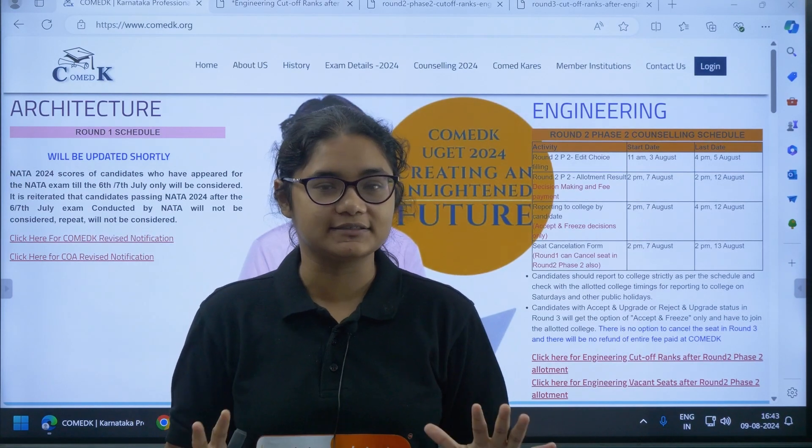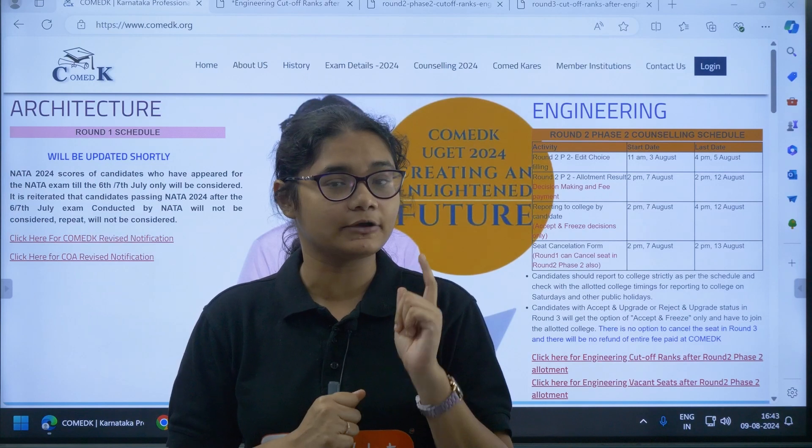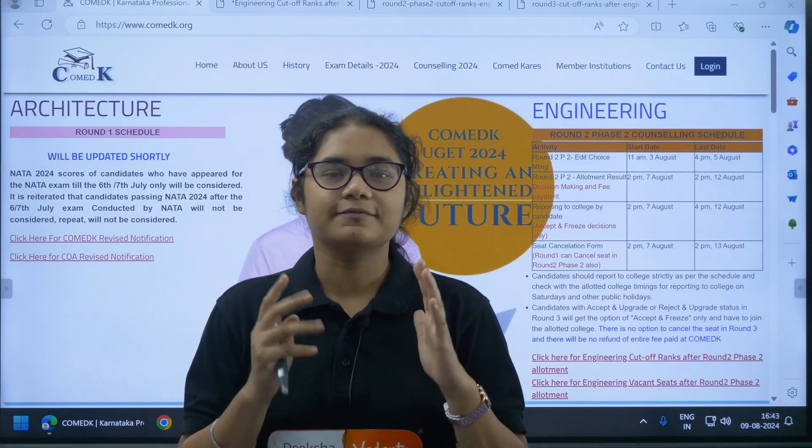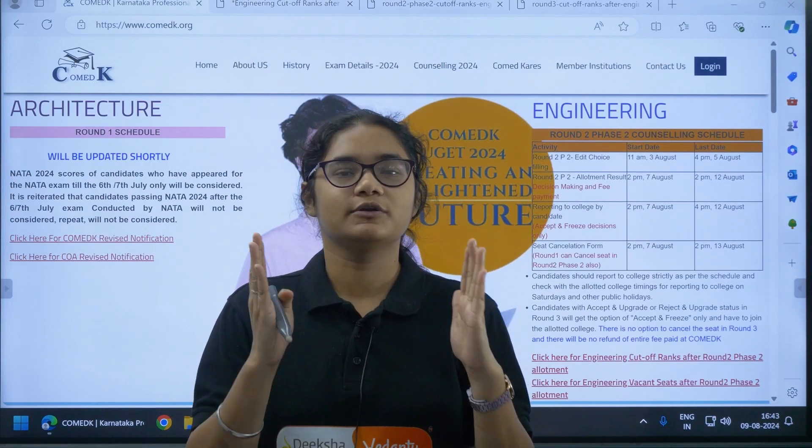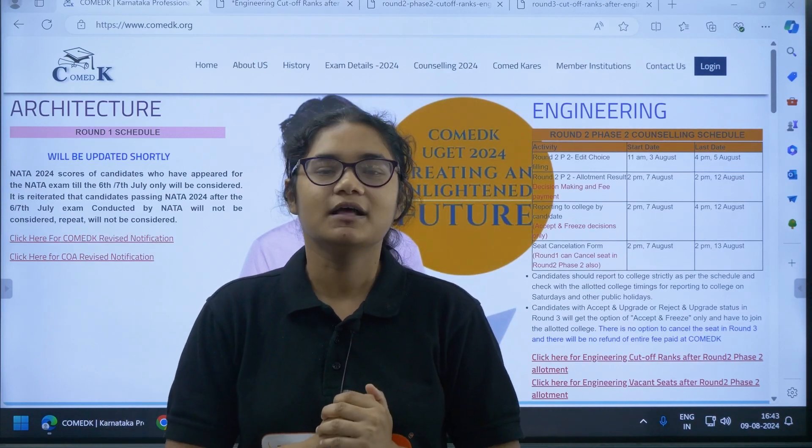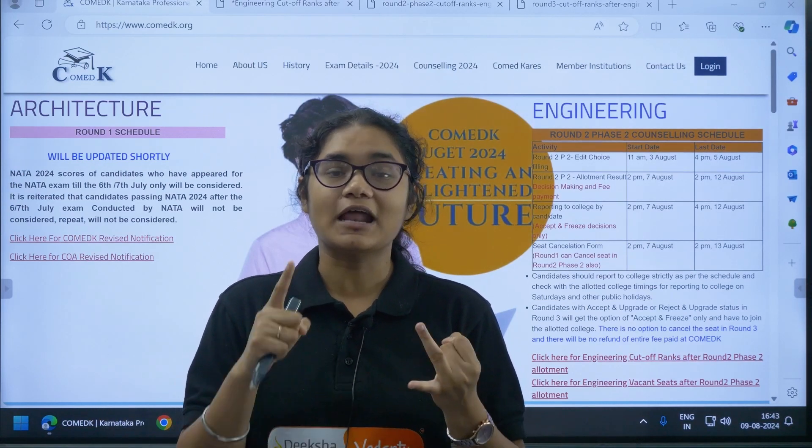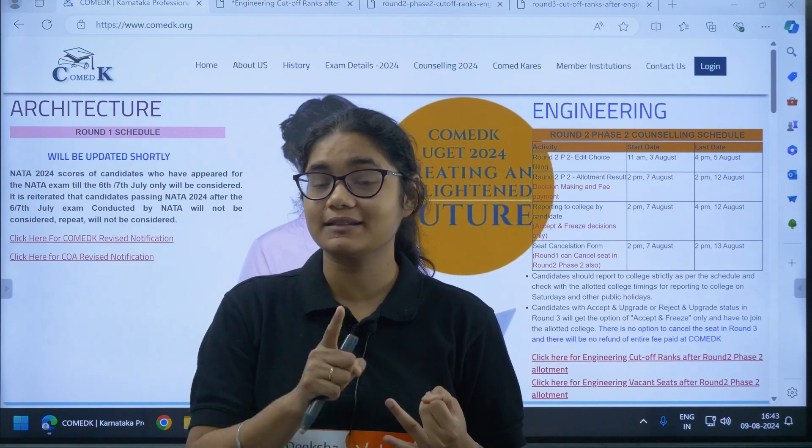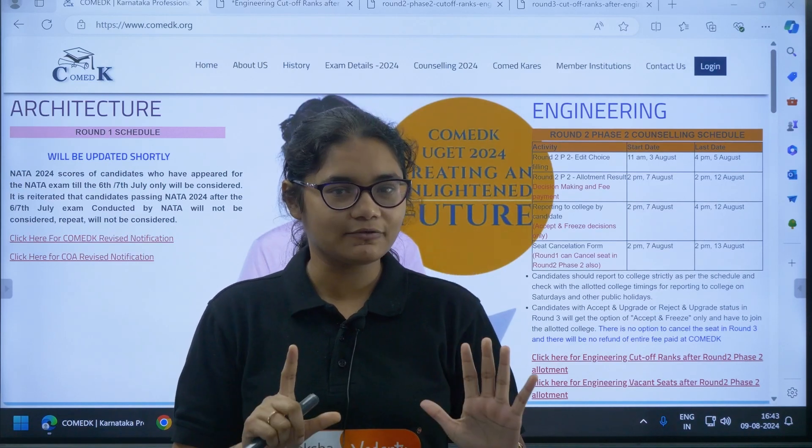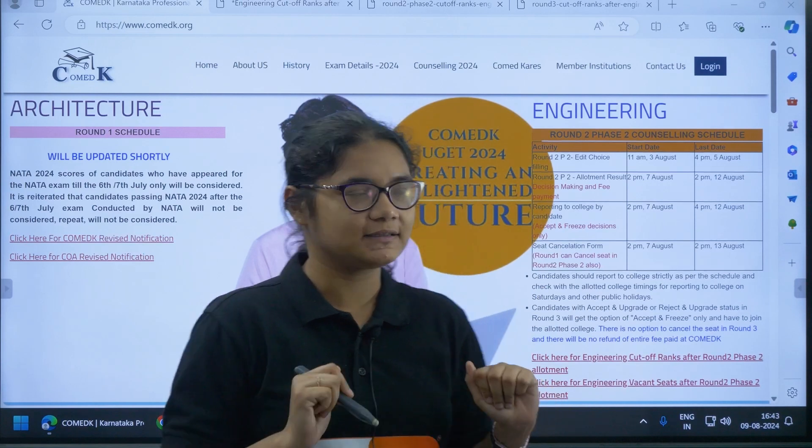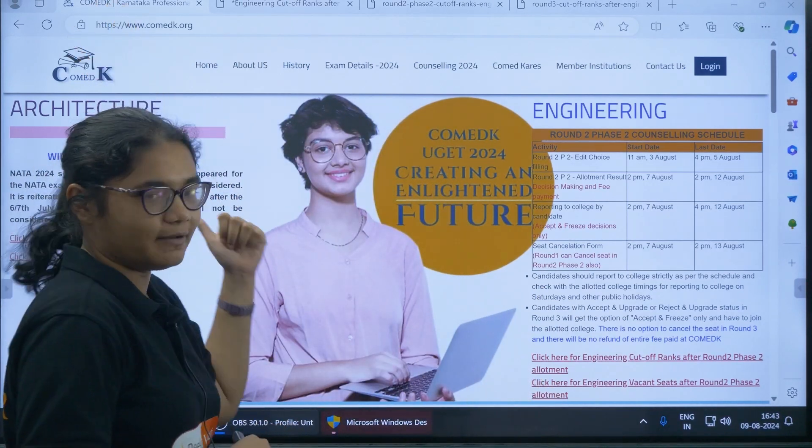So while taking this decision, there is an important parameter that you must consider. What is it? That important parameter is the Round 2 Phase 2 2024 engineering cutoff. So how to download this and how to utilize this resource to make the correct decision we will be discussing in this video. Part 1, how to download this, is very simple. You have to go to the COMET K website.